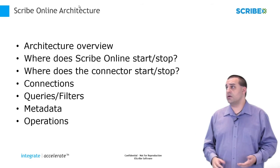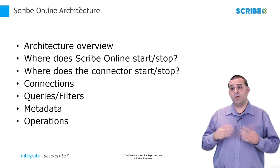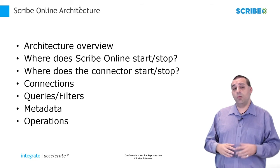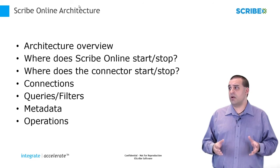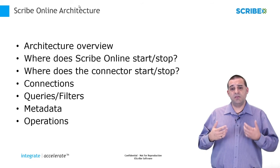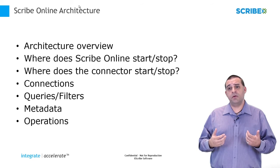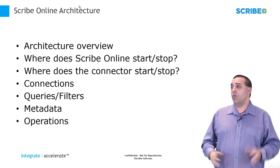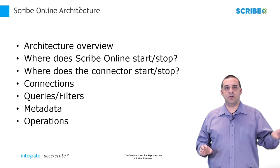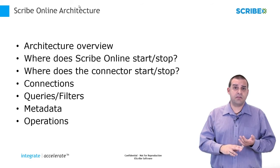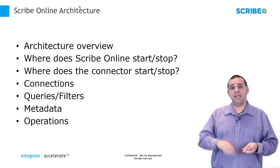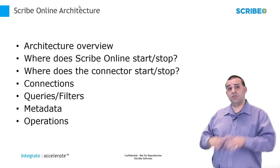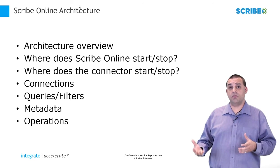When we talk about the Scribe Online Architecture, we'll be doing an overview of the architecture with visual examples of what pieces lie where within the Scribe Online world. We'll talk about where Scribe Online starts and stops — where it deals with most of your actual data transformations and authentications — versus where your connector deals with making connections to your data systems. We'll cover where your connectors start and stop and how much you actually need to do within the connector.